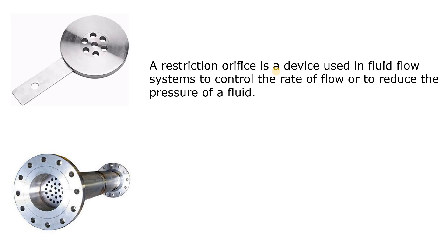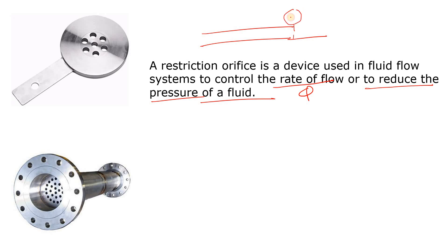Just see that this is your pipeline and here you insert the RO. Now the water is flowing through it. After installing the RO, what you are doing is reducing the cross-sectional area. This pipeline has a diameter D1, and where you are installing the restriction orifice you are restricting the flow by reducing the area, using an orifice plate — or simply, the RO.